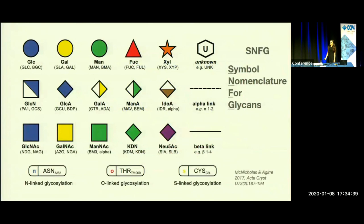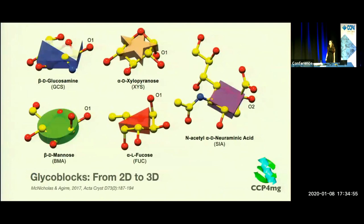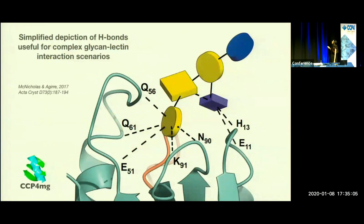Finally, I'm going to talk a little bit about carbohydrate representation. This is the symbol nomenclature for glycans representation, where each sugar is shown by a symbol. Glycoblox is a feature of CCP4MG, where these symbols are taken and represented in 3D. Here you can see an example of a carbohydrate ligand shown in Glycoblox, where these lines represent hydrogen bonding.